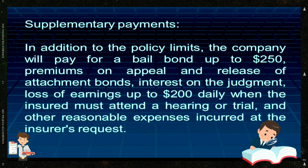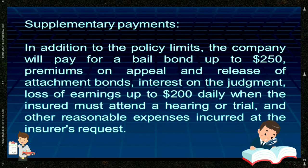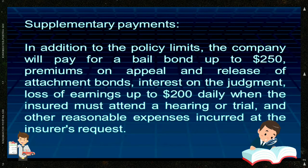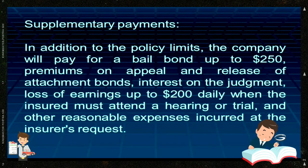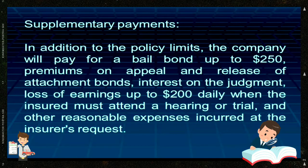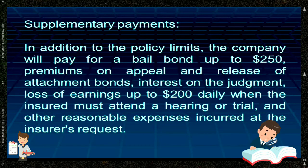Supplementary Payments. In addition to the policy limits, the company will pay for a bail bond up to $250, premiums on appeal and release of attachment bonds, interest on the judgment, and loss of earnings up to $200 daily when the insured must attend a hearing or trial.